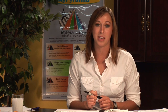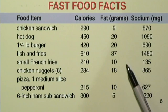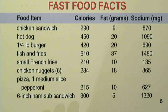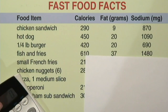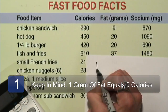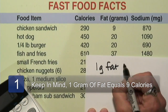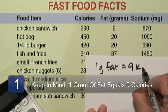Check those labels. Here's an example of a few fast food facts. These are plainly laid out for the fat grams and the calories. First and foremost, just to help you understand: 1 gram of fat equals 9 calories.